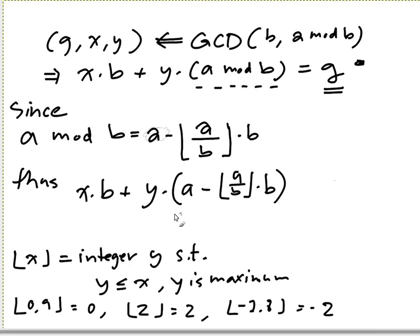So we put it in, and we rewrite the whole thing. So we get that y, so this is equal to y times a plus, I just factor b out, so you get that x, right, minus y times a over b, times b equal to g.